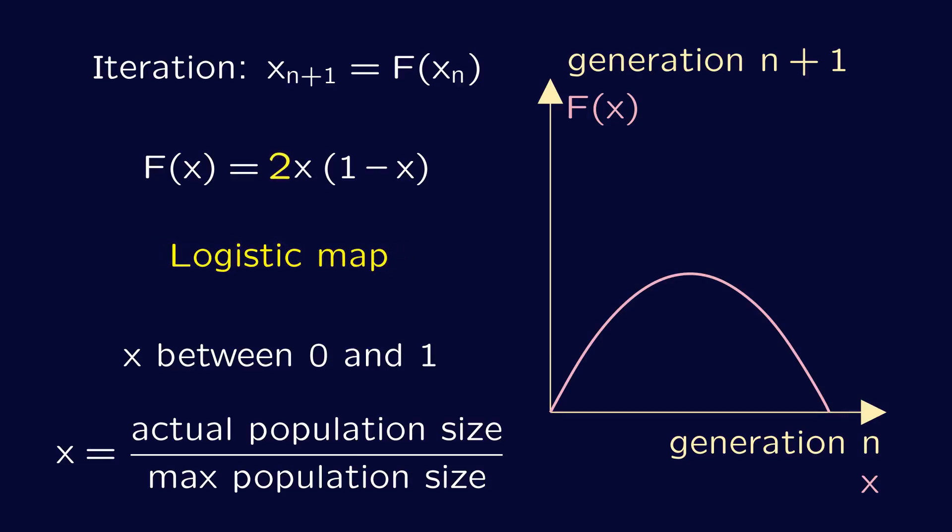The number 2 in it still indicates that for a very small population, the number of individuals would double each year. It could just as well triple, quadruple, or change by any other factor. So really we want to replace this number 2 by a parameter r that can take different values.